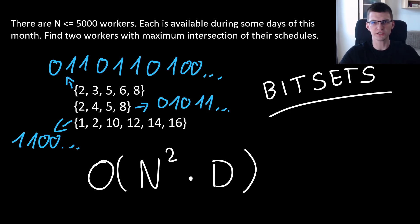Intersection of two workers is now just bitwise AND between two numbers and can be computed in constant time. This way we get rid of D. The complexity will be N square. The whole solution is first change every set into a binary number, store it as a single int. Iterate over all the pairs of workers, for each of them compute bitwise AND and in their bitwise AND we need the number of 1s, the number of common days.